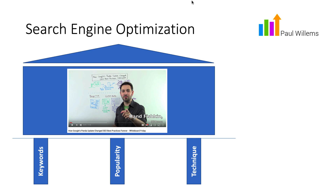This is the model I always use when talking about search engine optimization. In the early days, you only had to focus on keywords, popularity, and technique. But nowadays, those three factors are just the base of your SEO — your keywords need to be in order, your website needs enough popularity, and your technique must be solid.